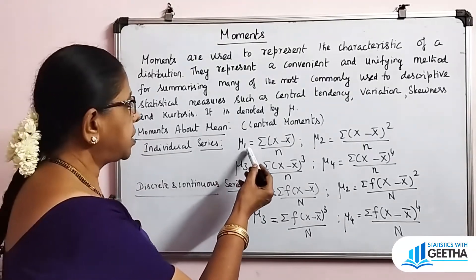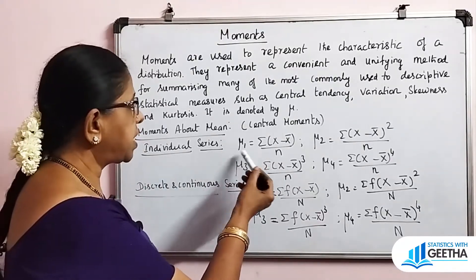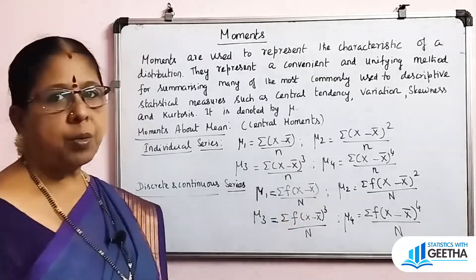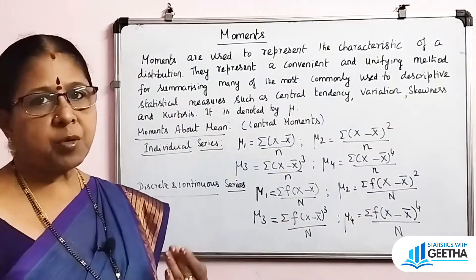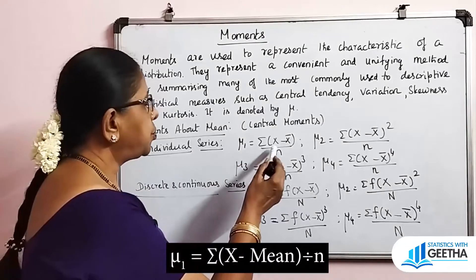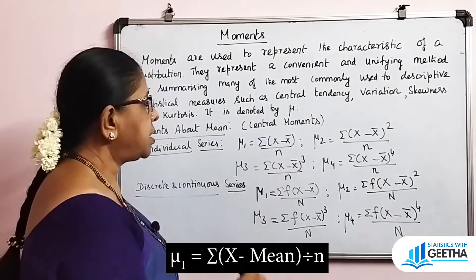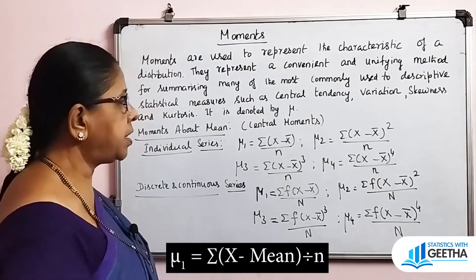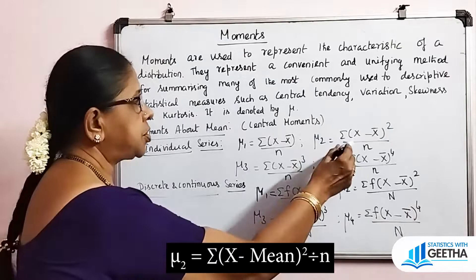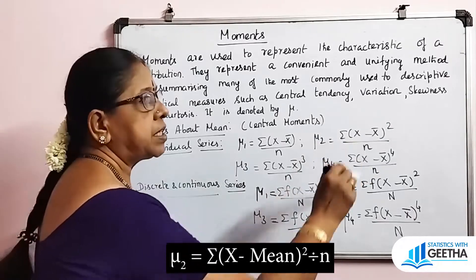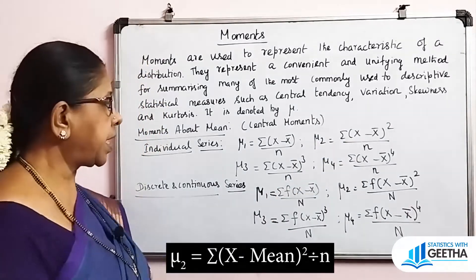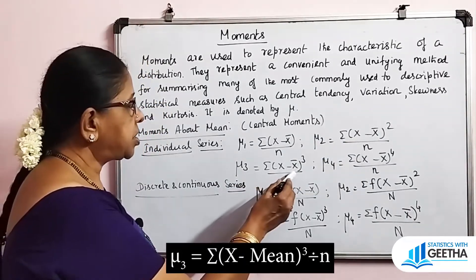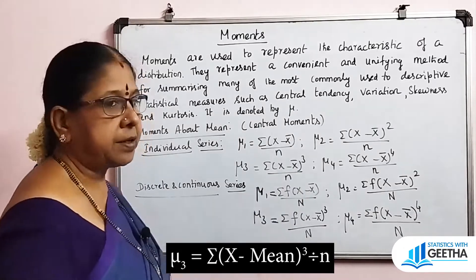For individual series, the central moments mu1, mu2, mu3, mu4 are defined as follows: mu1 = summation of (x minus x-bar) divided by n. mu2 = summation of (x minus x-bar) squared divided by n. mu3 = summation of (x minus x-bar) cubed divided by n.